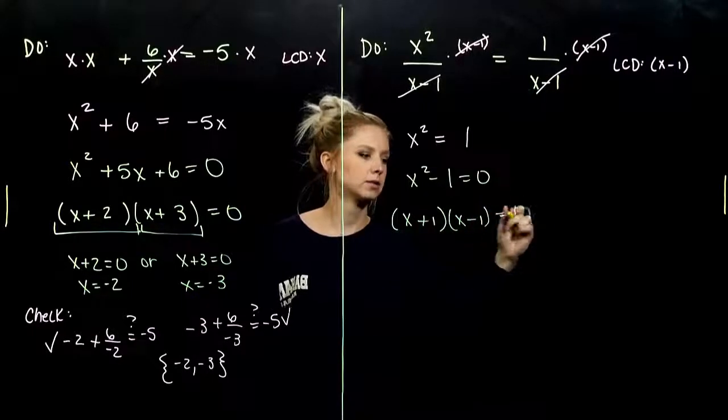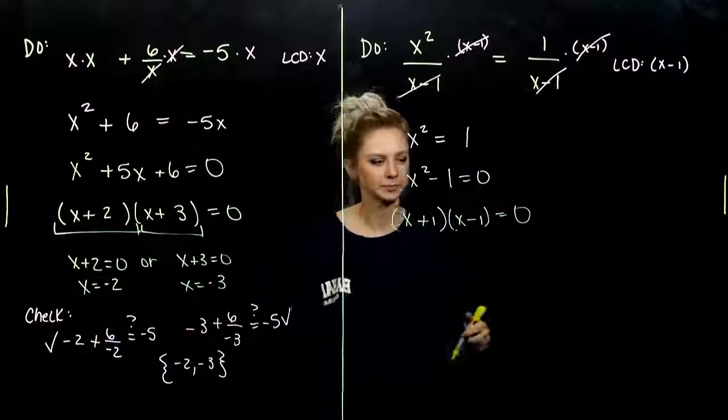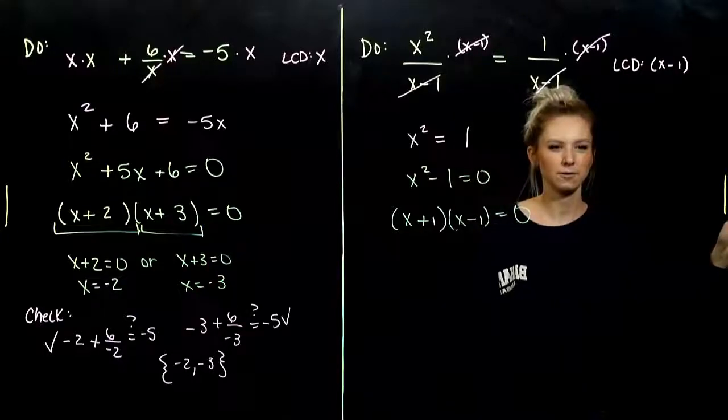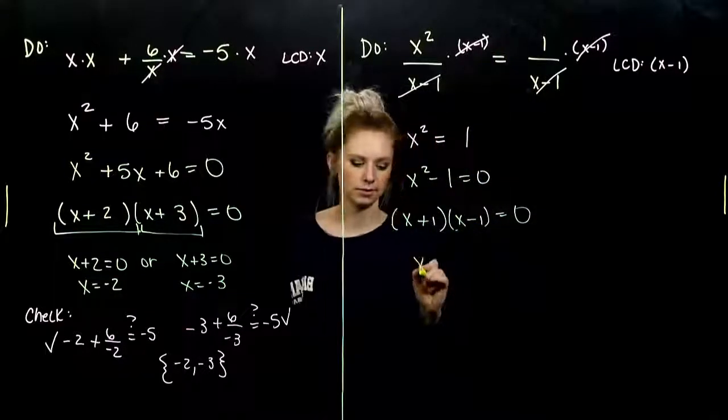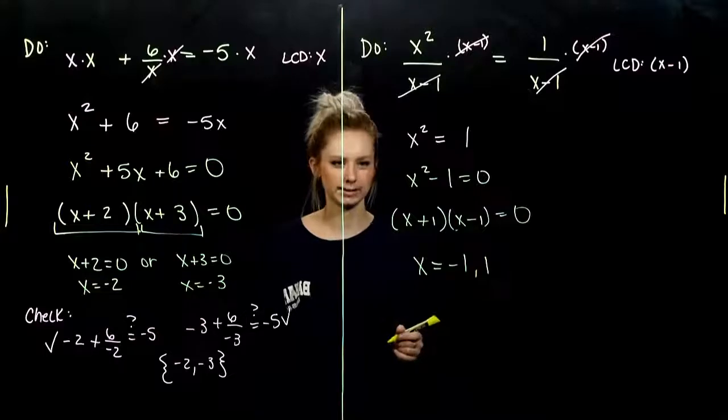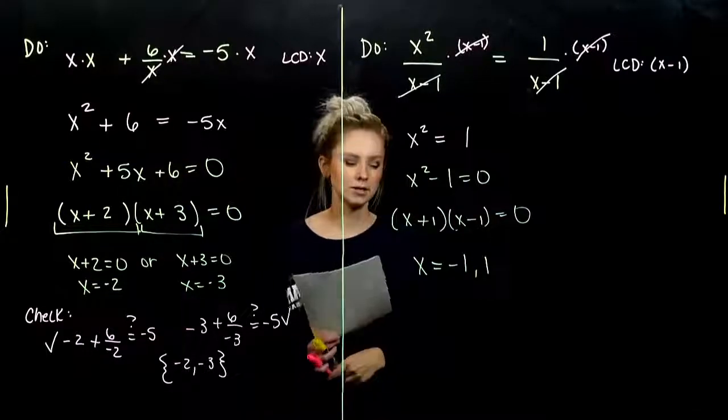So, we get x minus one, x plus one. Order doesn't matter. So, what does that mean for my x values? It's either going to be negative one or positive one. But we need to check.